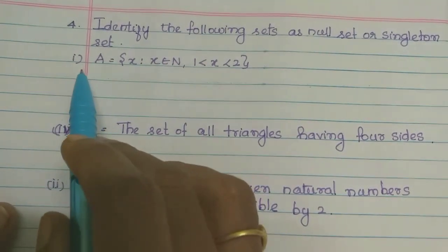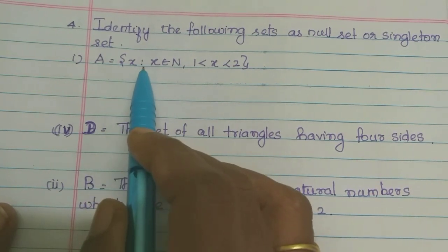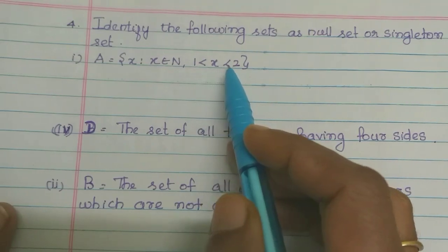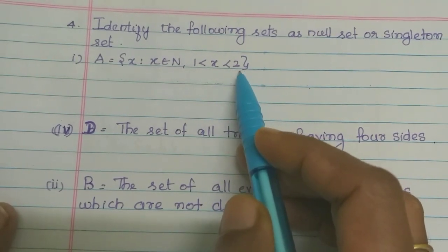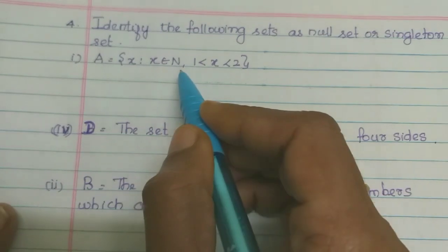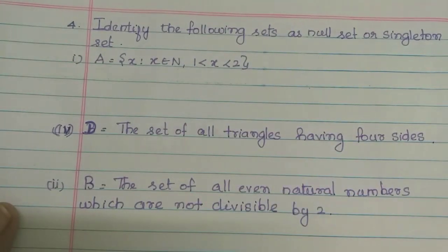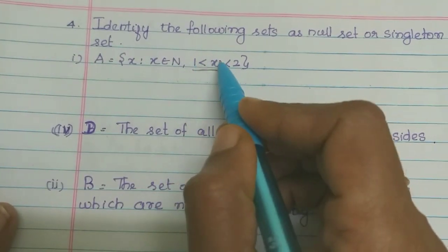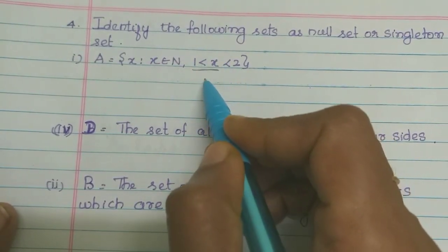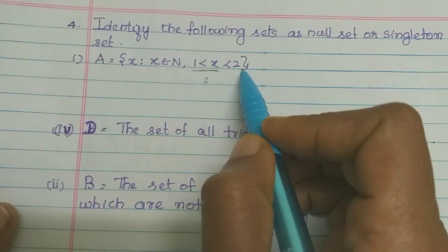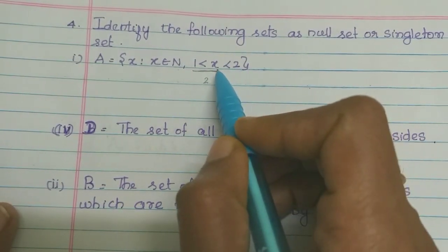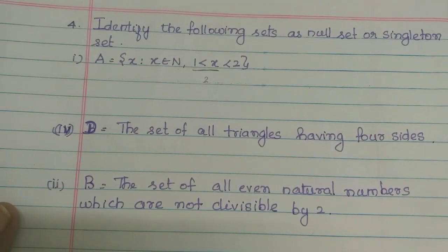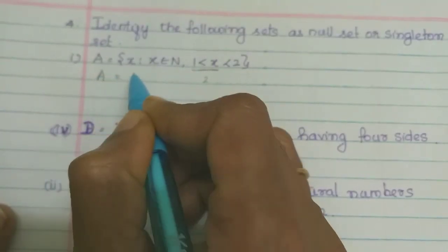First sum: A is equal to the set X such that X belongs to natural numbers and 1 is less than X, X is less than 2. Since X is a natural number, we look at values greater than 1. X must be greater than 1 and less than 2, but there is no natural number between 1 and 2, so there is no chance of any elements. Therefore, A is a Null Set.